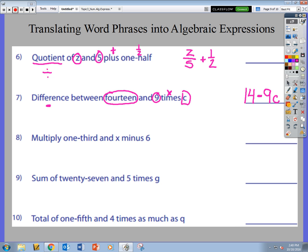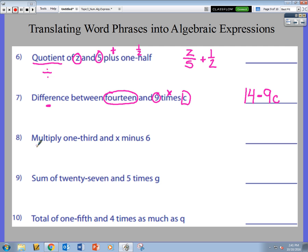Now let's look at the next one here. We have multiply. It's telling me, hey, you need to multiply one-third and x minus 6. Now here's the thing, it doesn't say multiply one-third times x.